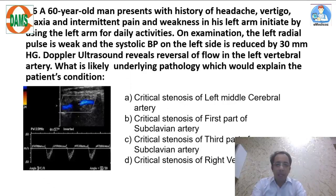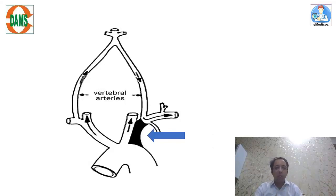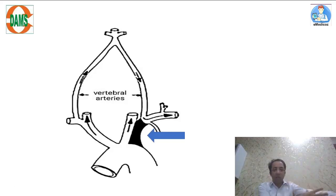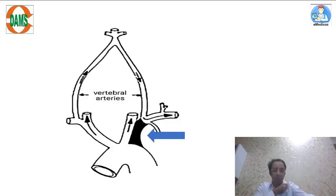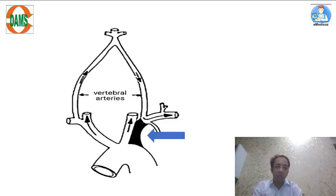The next is a clinical vignette: a 60-year-old man with headache, vertigo, and pain in the arm. Doppler reveals reversal of blood flow in the left vertebral artery. To understand this: suppose there is narrowing in the proximal subclavian artery. Blood supply to the arm and hand will suffer. The subclavian artery cannot get blood because the proximal part is narrow, so the vertebral artery starts to supply blood to the subclavian — acting as a collateral. This is called subclavian steal phenomenon.